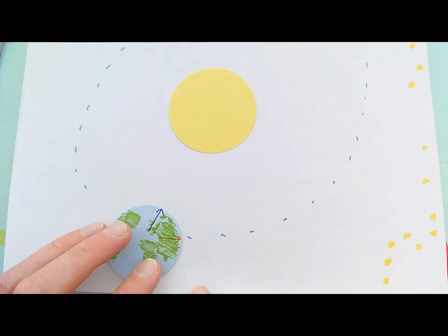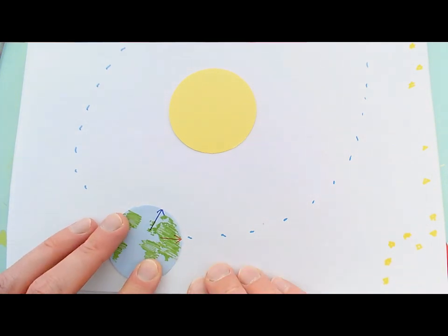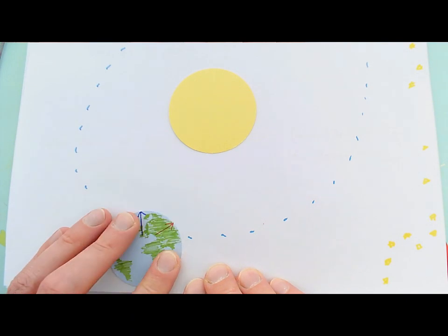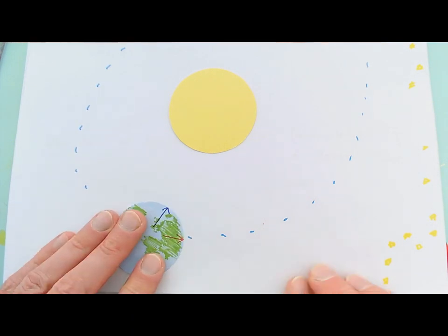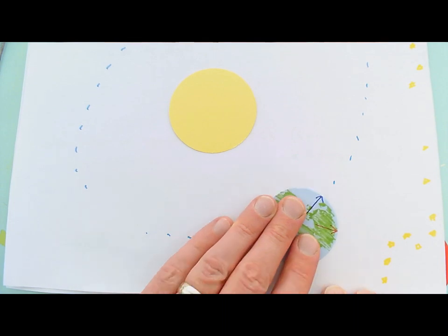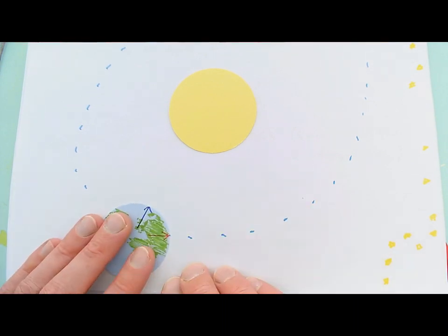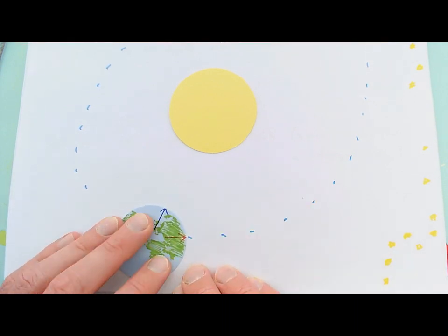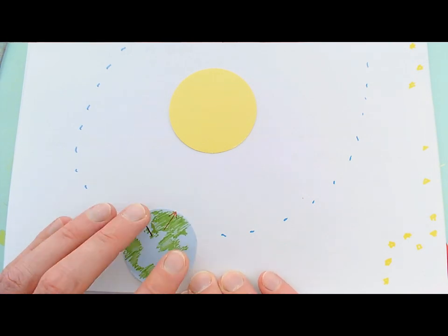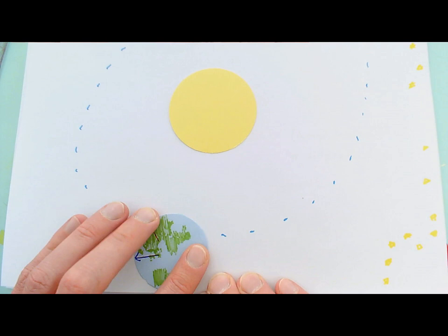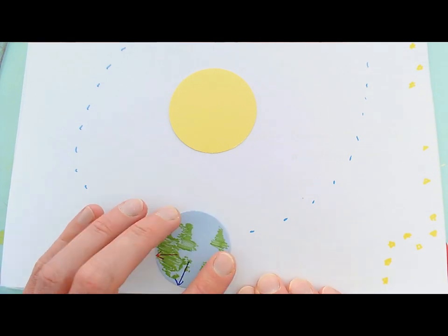But let's watch carefully, because actually what we have to remember is whilst the earth is rotating on its axis, it's also orbiting around the sun. And in a day, it will orbit a small distance around the sun. So let's start my rotation on its axis, but remember, I need to make sure it orbits the sun a little bit as well.